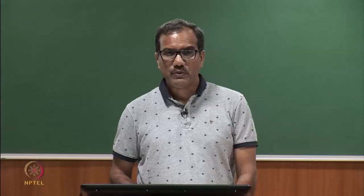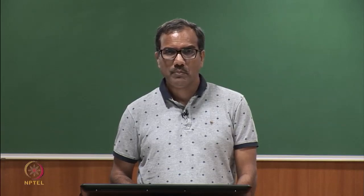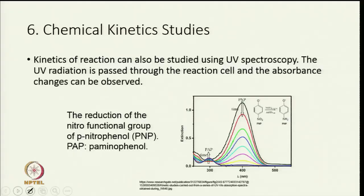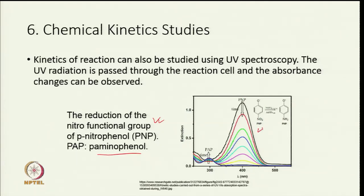UV visible spectroscopy can also be used to determine chemical kinetic parameters. Kinetics of any reaction can be studied by passing UV radiation through a reaction cell and observing absorbance as a function of time. For example, the reduction of the nitro functional group of para-nitrophenol (PNP) to para-aminophenol (PAP) can be monitored this way.